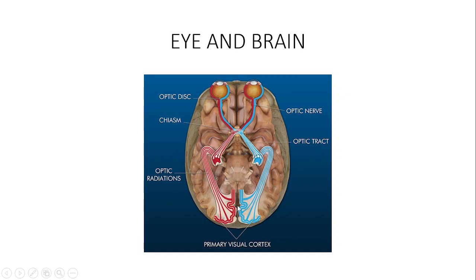Then it ends up in the primary visual cortex, which has an upper bank and a lower bank.